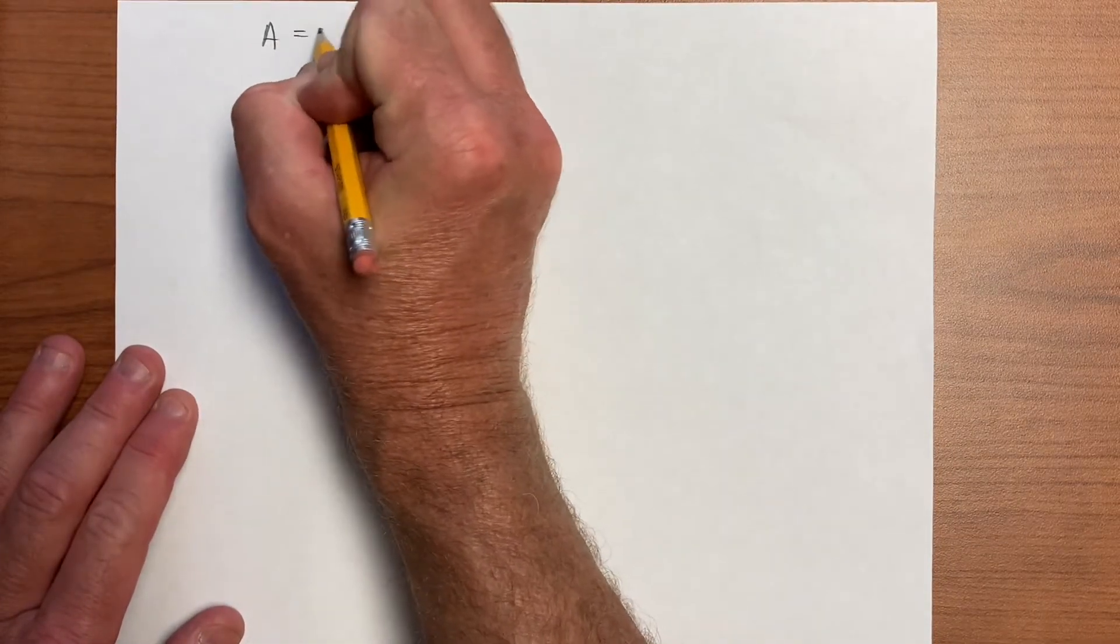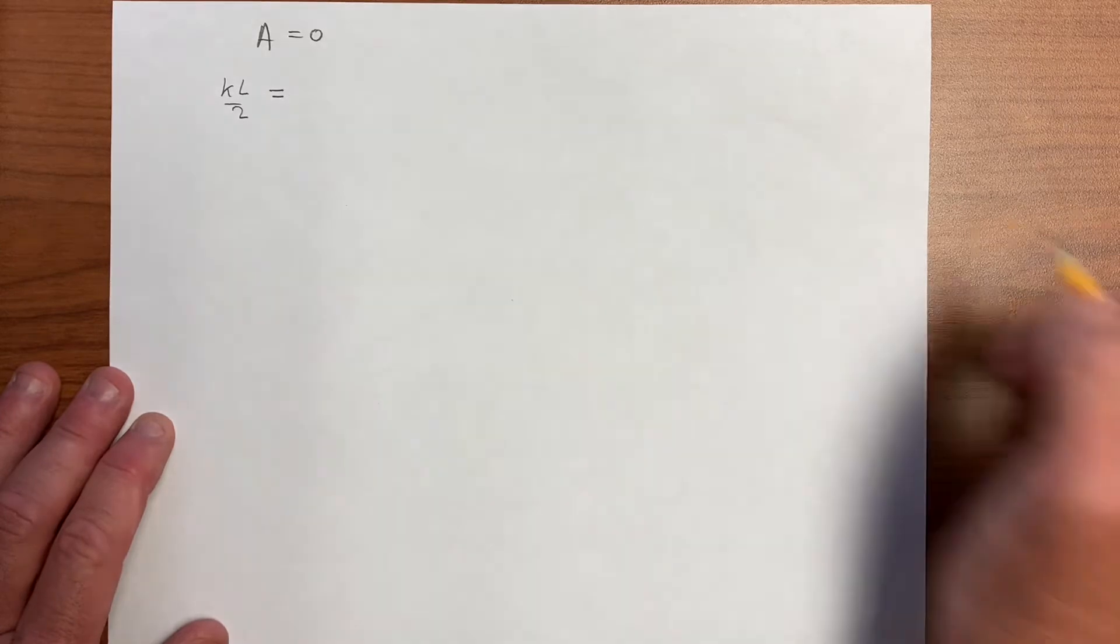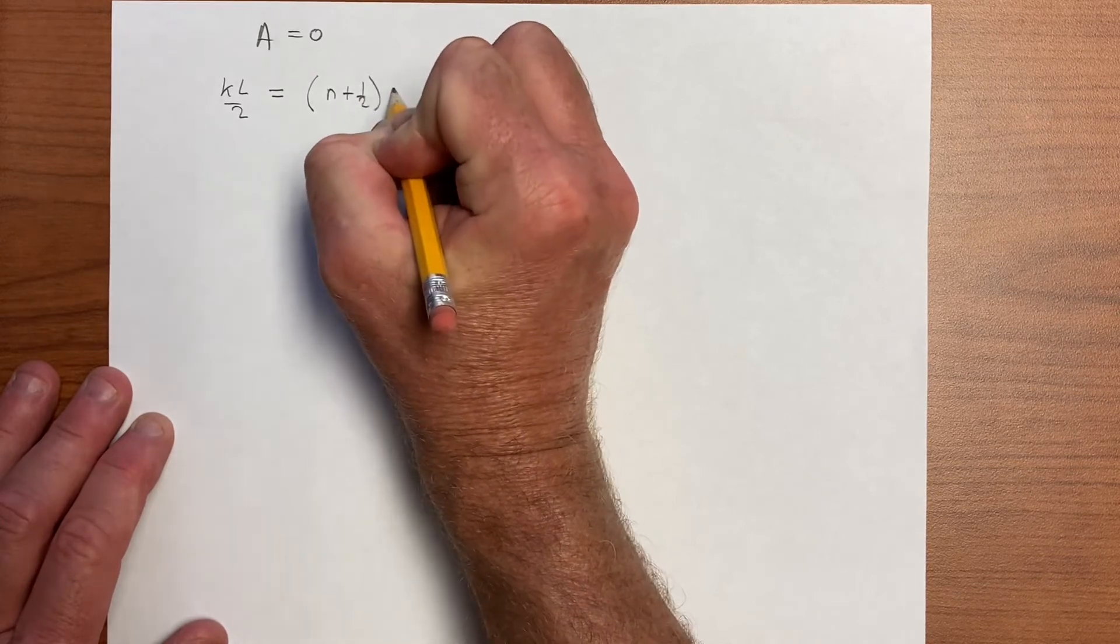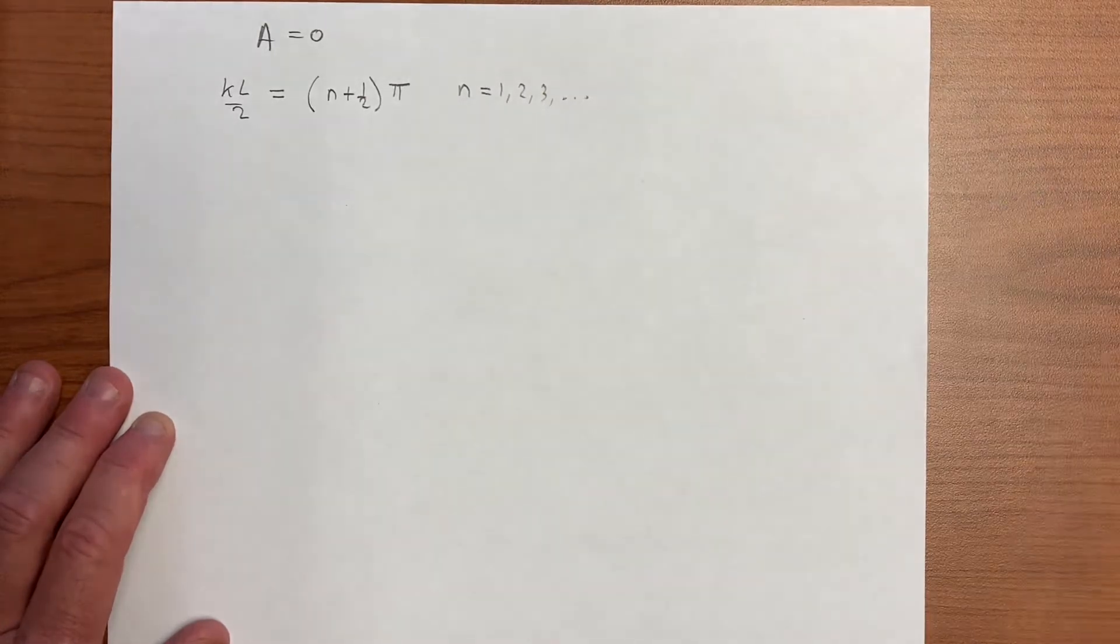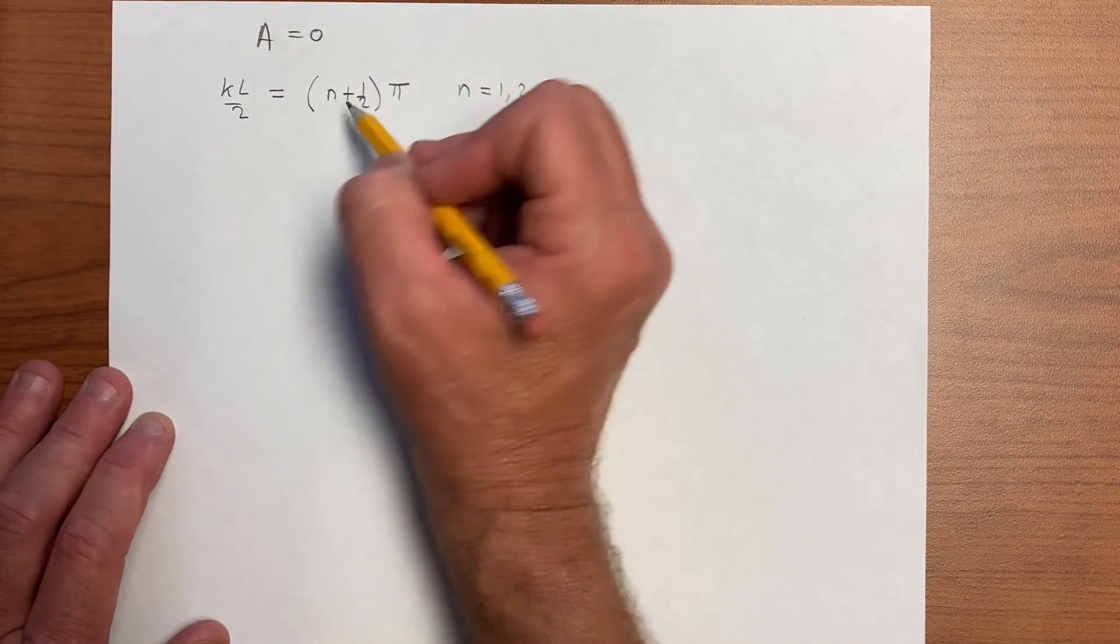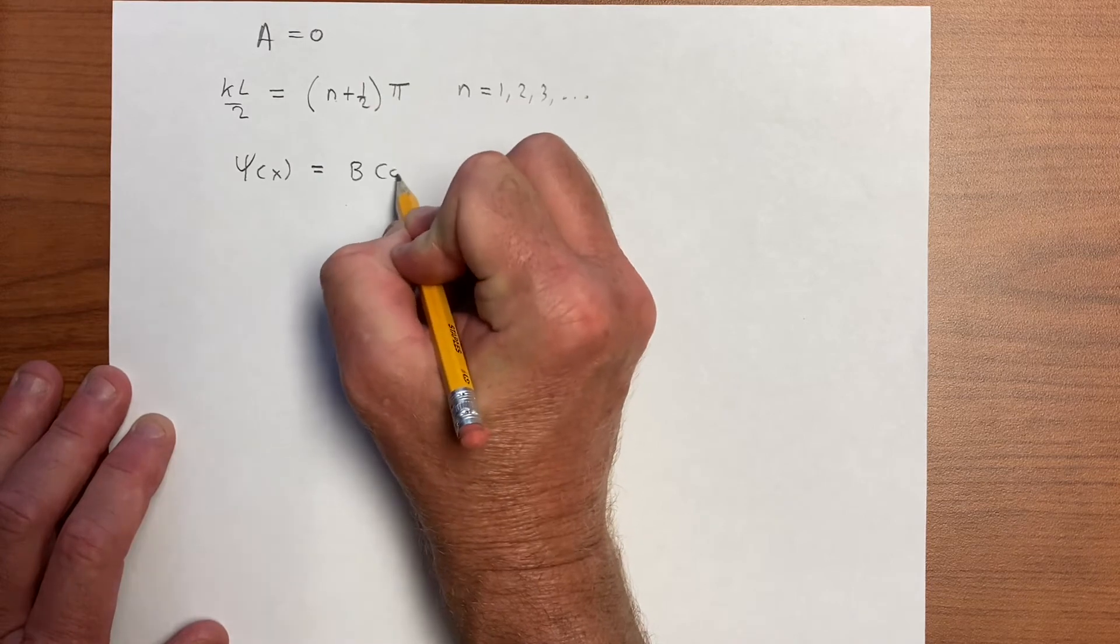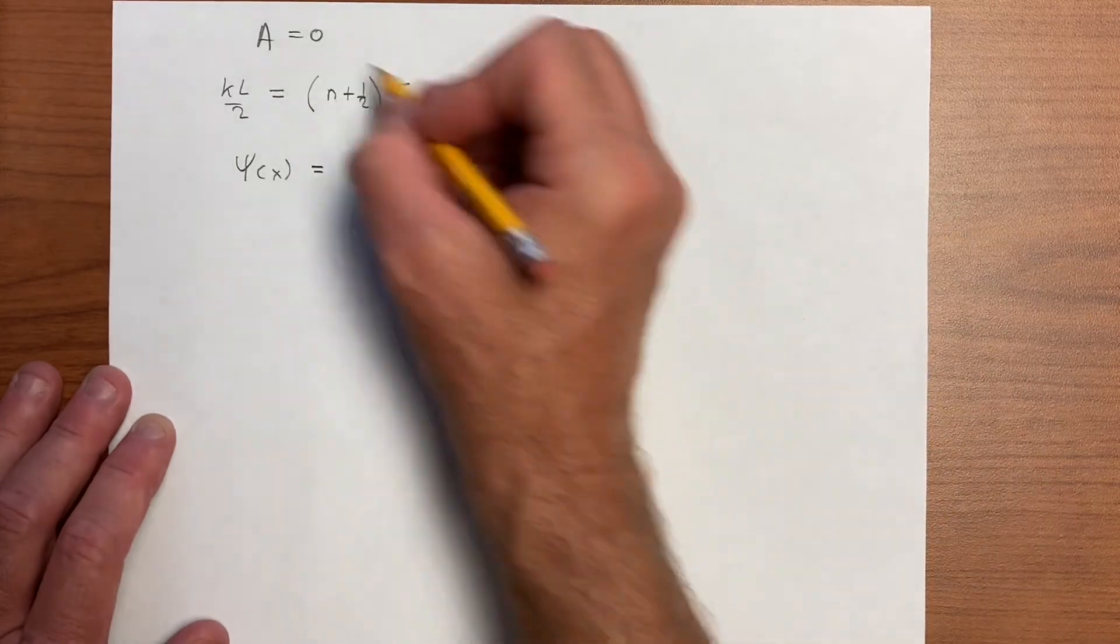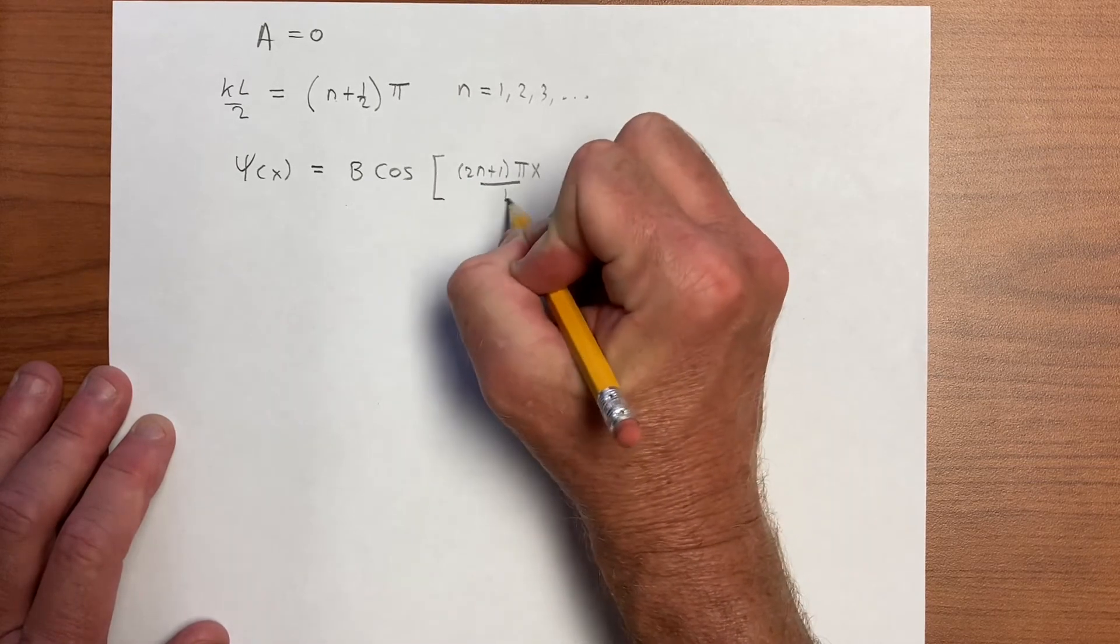If A is equal to 0, then we have kL over 2 is equal to, where we have the cosine function has to go to 0, so we have n plus a half times pi, where n is 1, 2, 3, and so on. That will, all these values, 3 halves pi, 5 halves pi, cosine of those values go to 0, and so psi of x would be B cosine of, if we multiply by 2, here we get 2n plus 1 pi x over L.